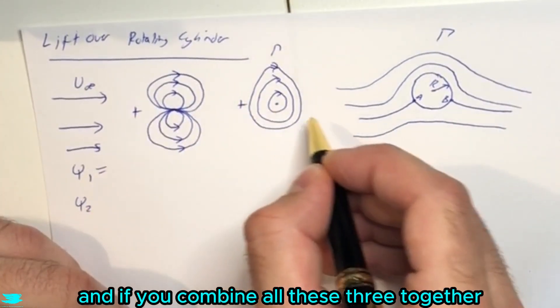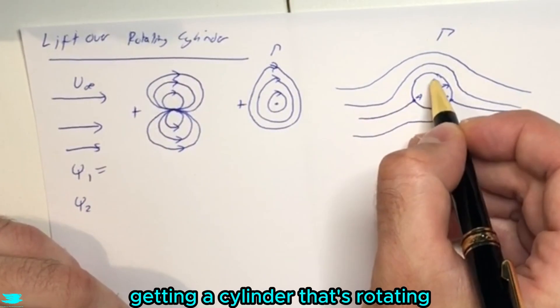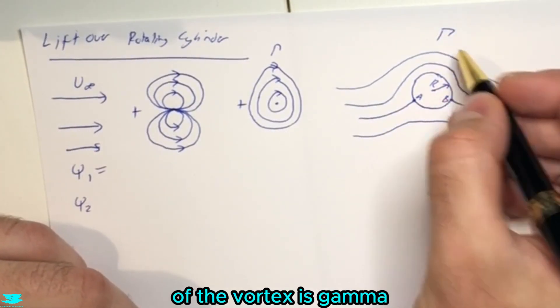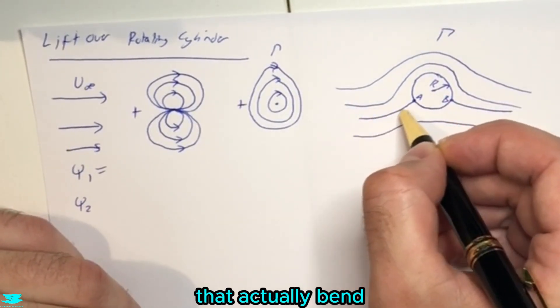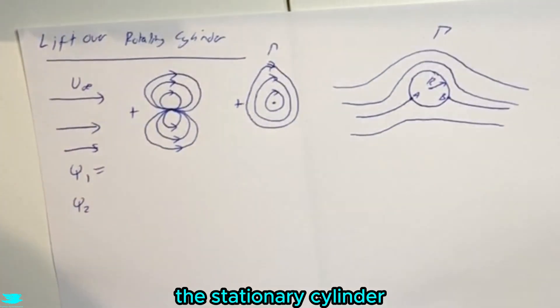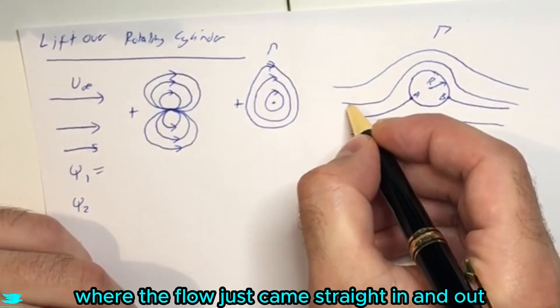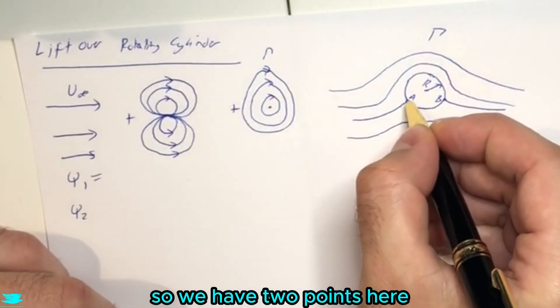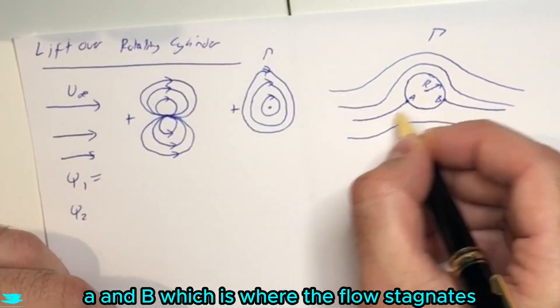And if you combine all these three together, we end up getting a cylinder that's rotating at some kind of speed. And we have the strength of the vortex is gamma. And we have the streamlines that actually bend like this, as opposed to the stationary cylinder where the flow just came straight in and out. So we have two points here, A and B, which is where the flow stagnates.